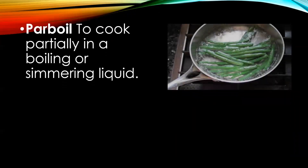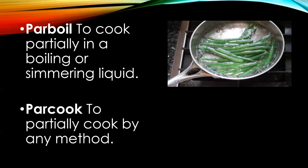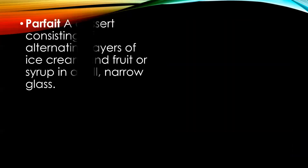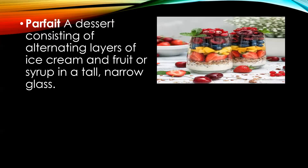The next words are parboil and parcook, which can be used interchangeably. It basically means to cook partially, or to boil or simmer in liquid and then partially cook or half-cook the vegetable. Most of the time it is used to retain colour. The next term is parfait, a dessert consisting of alternating layers of ice cream and fruit or syrup in a tall narrow glass.